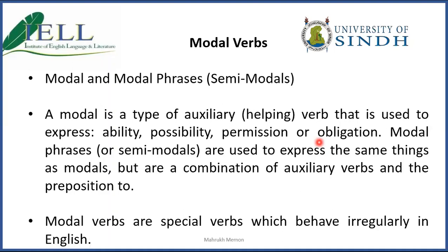For example, when I say 'I can do this,' that means I'm showing my ability. So I'm using 'can' — a particular modal verb — to show my ability. Or 'this can happen' — that's a possibility. Or 'can I leave?' — there I'm asking for permission. So there are various ways for which we use different modals.